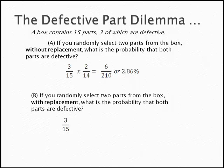The likelihood that the second part is bad? You are correct. In fact, it is still 3 out of 15 because we put the first part back and the sample space was restored to 15, and again there were 3 bad parts in the box.